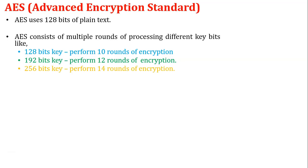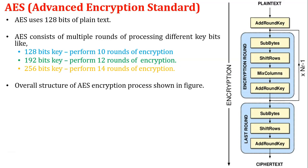So in the AES encryption algorithm, the plain text size is fixed at 128 bits, but it uses different sizes of encryption keys. This diagram shows the overall structure of the AES encryption process.